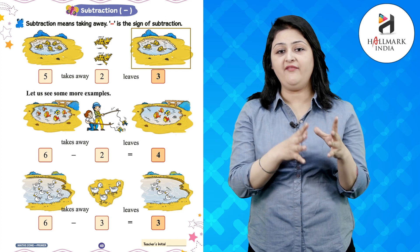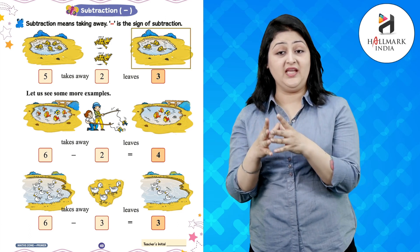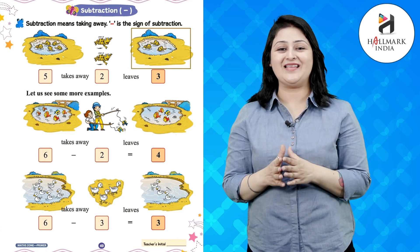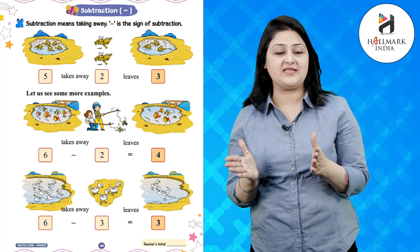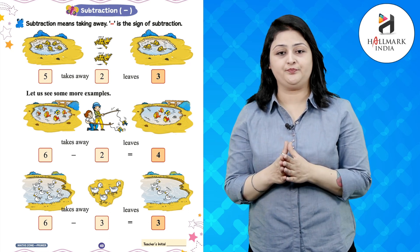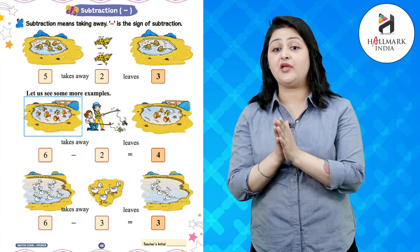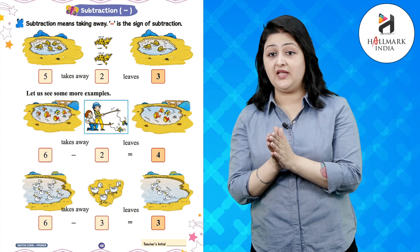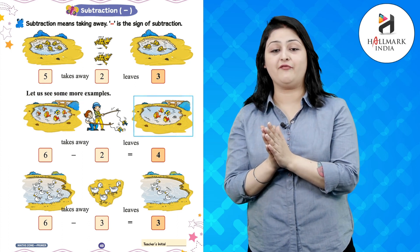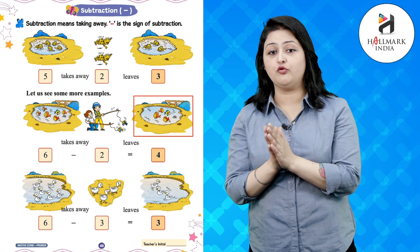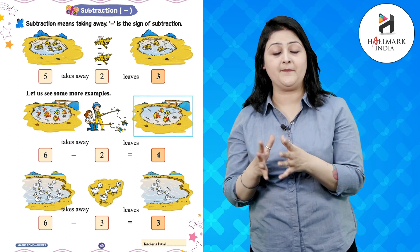Five take away two leaves three. Let us see some more examples. Six take away two leaves four. Yes, if we minus two from six then four will be remaining.